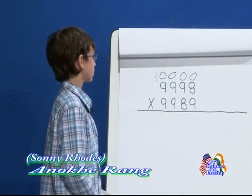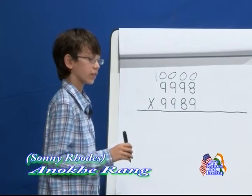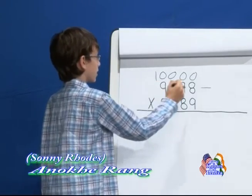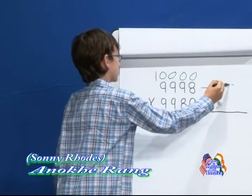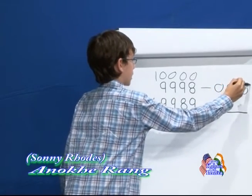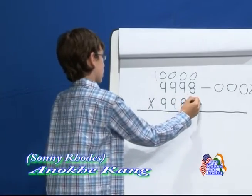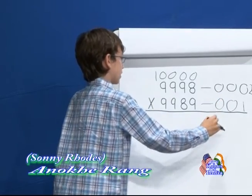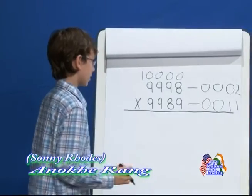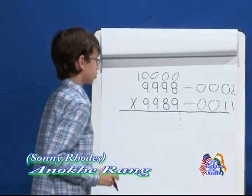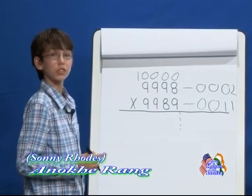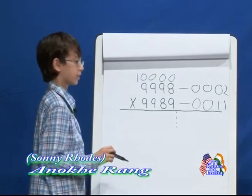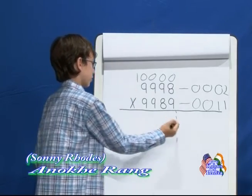The next step is to do what the sutra says: all from nine, last from ten. So it would be 9 from nine = 0, 9 from nine = 0, 9 from nine = 0, and 8 from ten = 2. Next: 9 from nine = 0, 9 from nine = 0, 8 from nine = 1, and 9 from ten = 1. The next step is to make a small dashed line to show that the answer consists of two parts: the right side and the left side. The next step is to find how many digits would be on the right side — it is due to the number of zeros in the base, so there would be four digits.